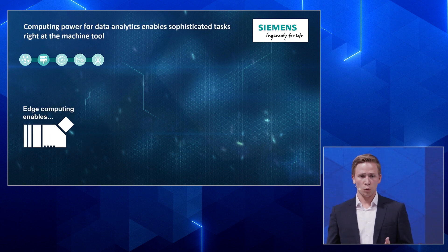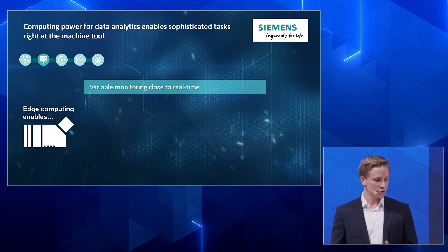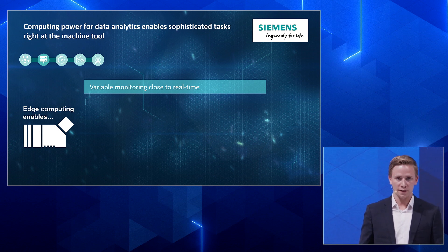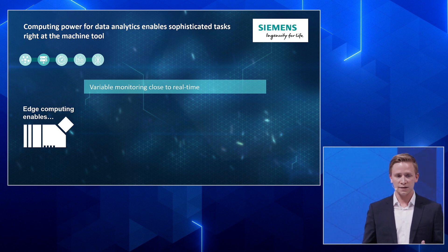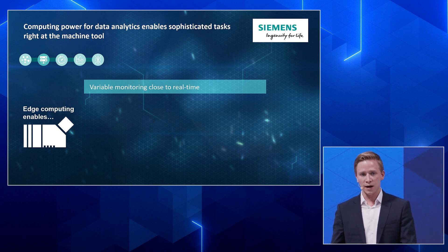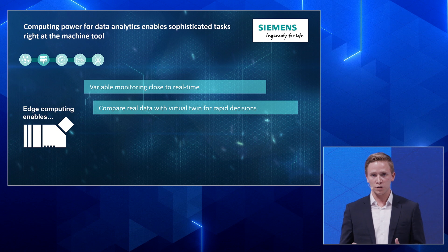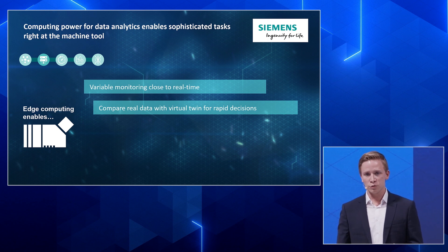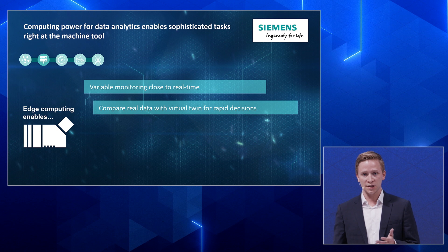Sinumerik Edge enables several use cases. First, you could monitor variables in real-time and get feedback about quality — for some parts you no longer need to do quality checks. Second, you could compare real data with a virtual twin on the edge device, for example two seconds in advance, to avoid collisions — if they occur in the virtual environment, you can stop your machine in time.